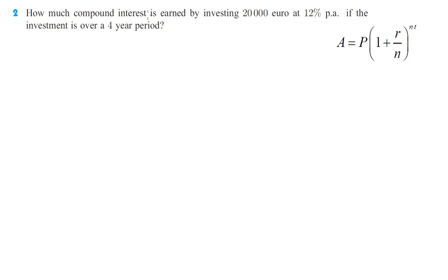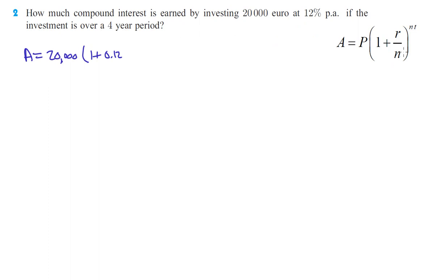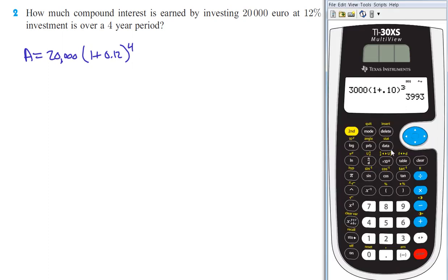Number two: how much compound interest is earned by investing 20,000 euro at 12% per annum if the investment is over a four-year period? Similar to what we just did on number one. The amount — we're trying to figure out what the amount is going to be if you invest 20,000 euro. It doesn't matter what denomination it's in; we can still use the same formula. One plus our rate, which is 12%, 0.12. These Ns are the compounding periods, and this is not compounded monthly or weekly, so these Ns just turn into one.